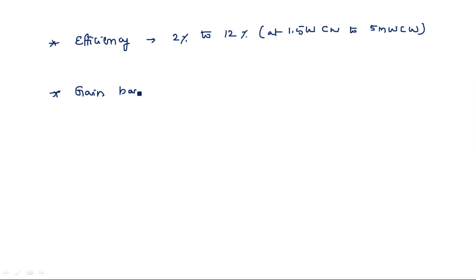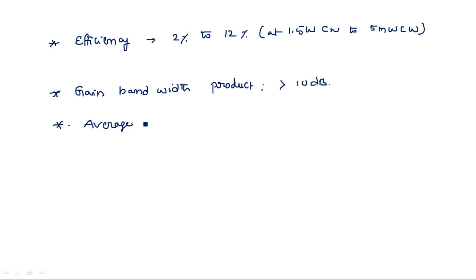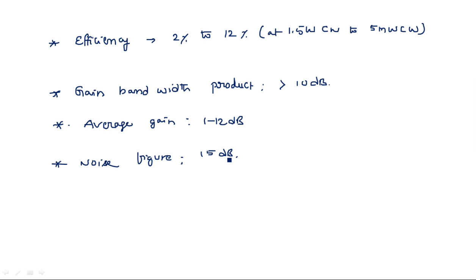The gain bandwidth product is greater than 10 decibels, which is a very good feature. The average gain is 1 to 12 decibels, and the noise figure is 15 decibels. These are the important characteristics of the Gunn diode.